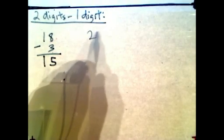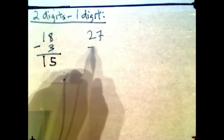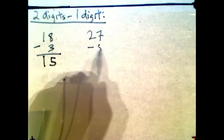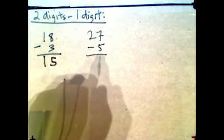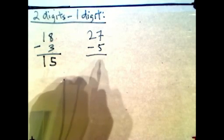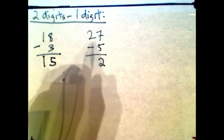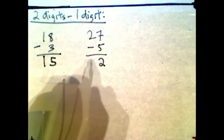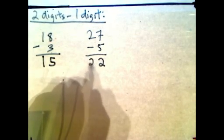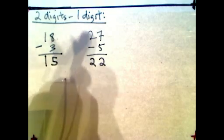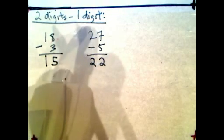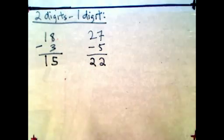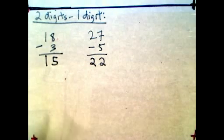Let's look at another one: 27 minus 5. 7 minus 5 gives you 2, and you still have the 2 tens — you don't touch the tens. So the answer is 22.